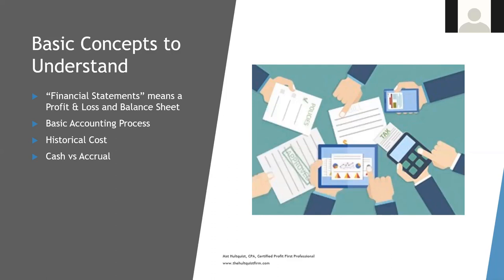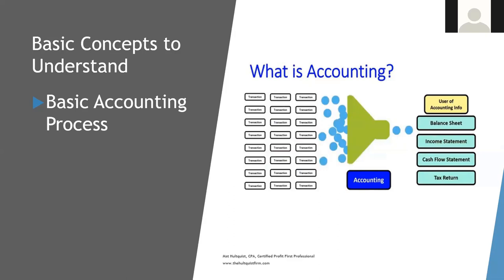So in accounting and in a business, you can see on the left-hand side there are thousands and thousands of transactions. All accounting is, is putting all of that into a filter to generate your financial statements — your balance sheet, income statement, cash flow statement, tax return, and a number of other statements. Basically, it's boiling down all this information, summarizing it, and putting it into a format that's much easier to read than a box of receipts.